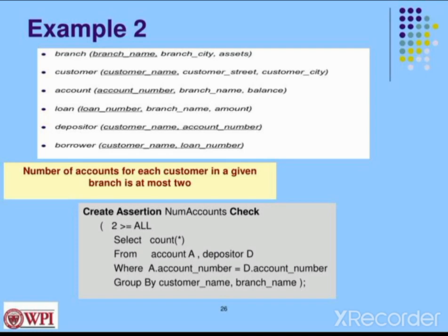Then we have the next query: SELECT COUNT(*) FROM account a, depositor d WHERE a.account_number equal to d.account_number GROUP BY customer_name, branch_name. This counts the number of accounts per customer per branch.